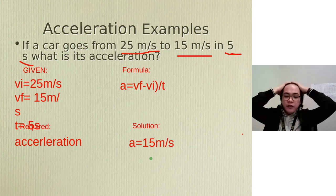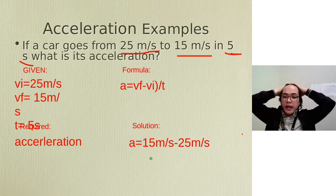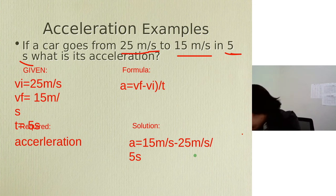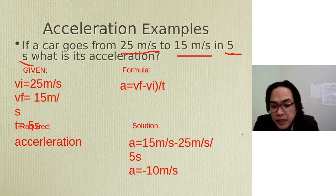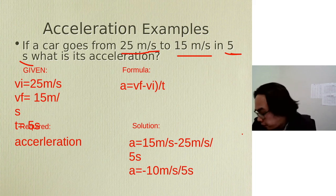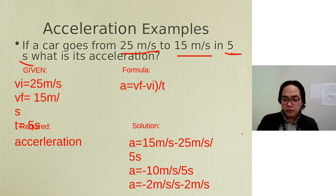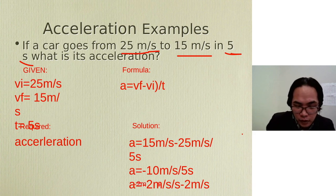So A equals 15 meters per second minus 25 meters per second divided by 5 seconds. What is 15 minus 25? It's negative 10 meters per second divided by 5 seconds. Our final answer is negative 2 meters per second per second, or negative 2 meters per second squared.